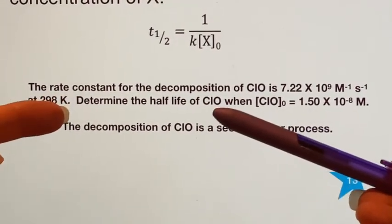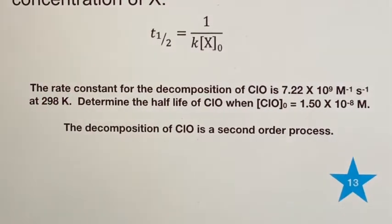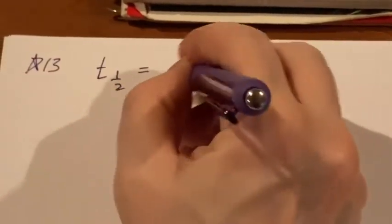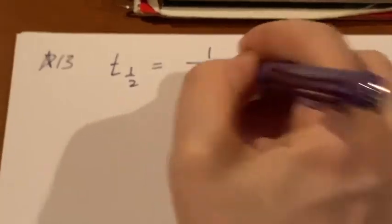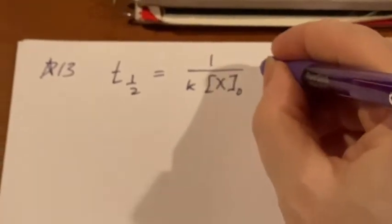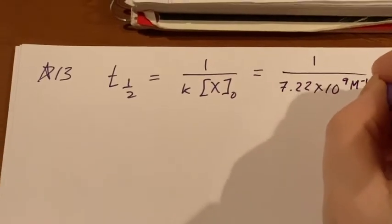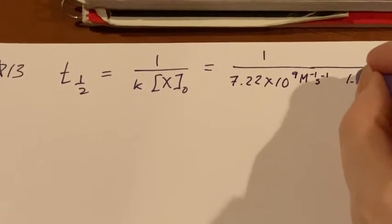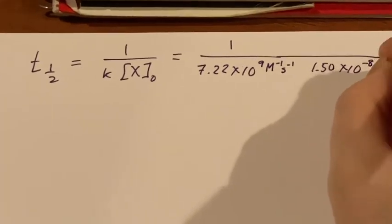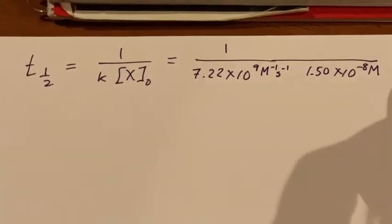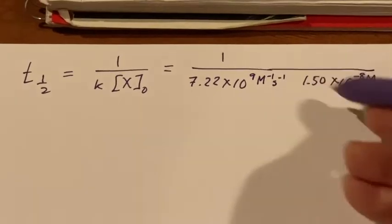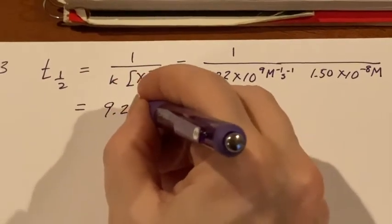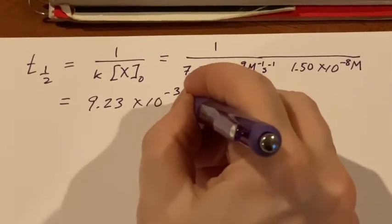Since they want us to figure out the half-life, all we have to do is plug in the two things they gave us, because they have the formula right here. The half-life is 1 over K times the original value of the substance: 10 to the 9th inverse molarity inverse seconds, multiplied by 1.50 times 10 to the negative 8 molarity. You can see the molarity units cancel, and the inverse seconds becomes just seconds. We get 9.23 times 10 to the negative third seconds.